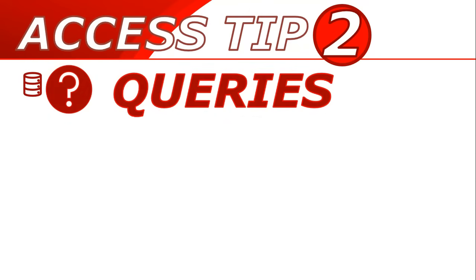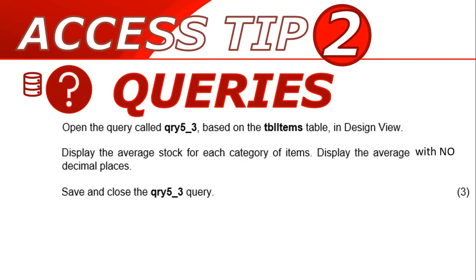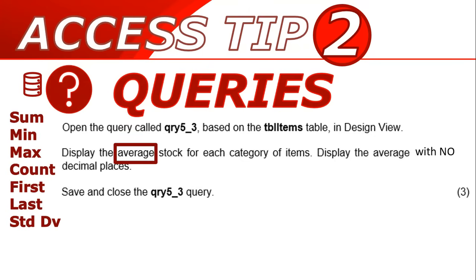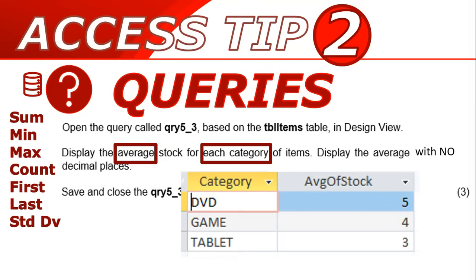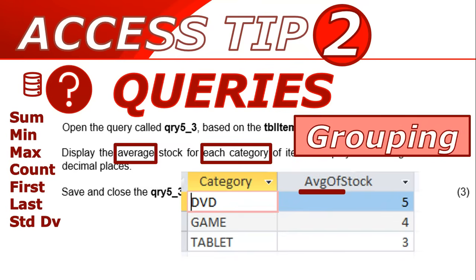My next tip is about queries. There's a particular query they love to ask that looks something like this: they ask for the average of something, maybe the sum, min, max, count, or even the standard deviation for each category. Sometimes they give you a diagram and you'll see there's no 'AVG of stock' field, but there is a stock field — it's as though 'AVG of' has been added in front, or 'sum of', 'min of', or 'max of'. That tells you you're dealing with a grouping question.